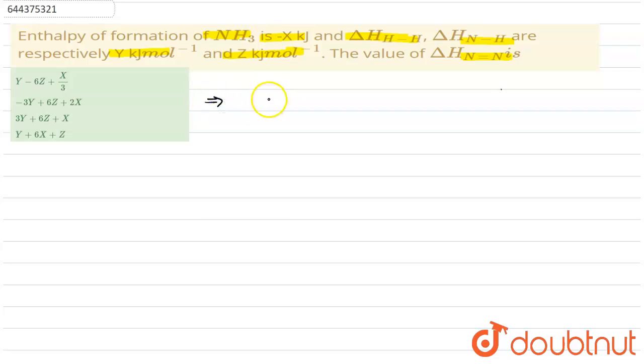So first of all, let's write down the preparation of ammonia, that is formation of ammonia. The reaction would be N₂ plus 3H₂ gives you 2NH₃.